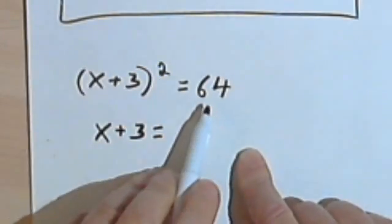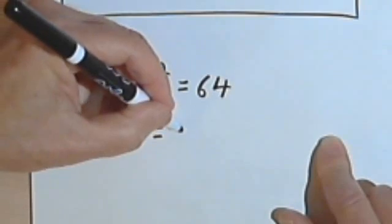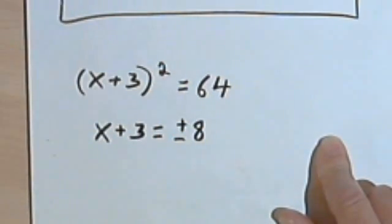And then of course I have to remember that even though the square root of 64 is 8, I want plus or minus 8.